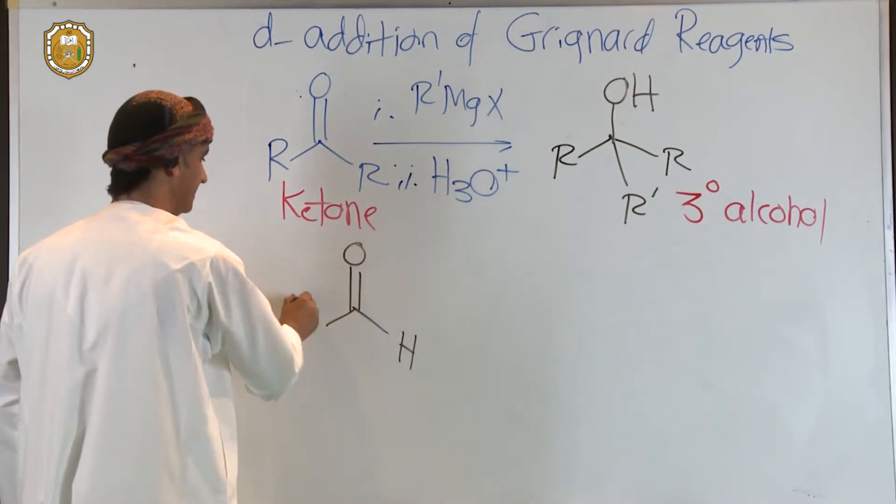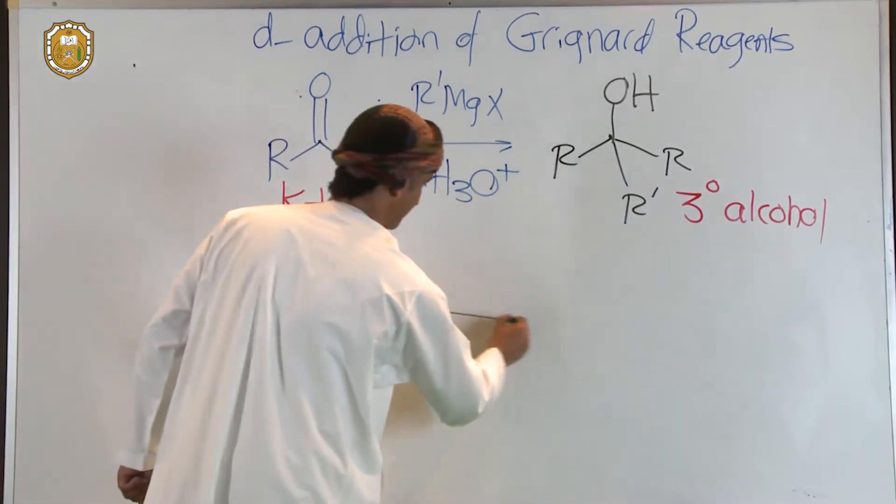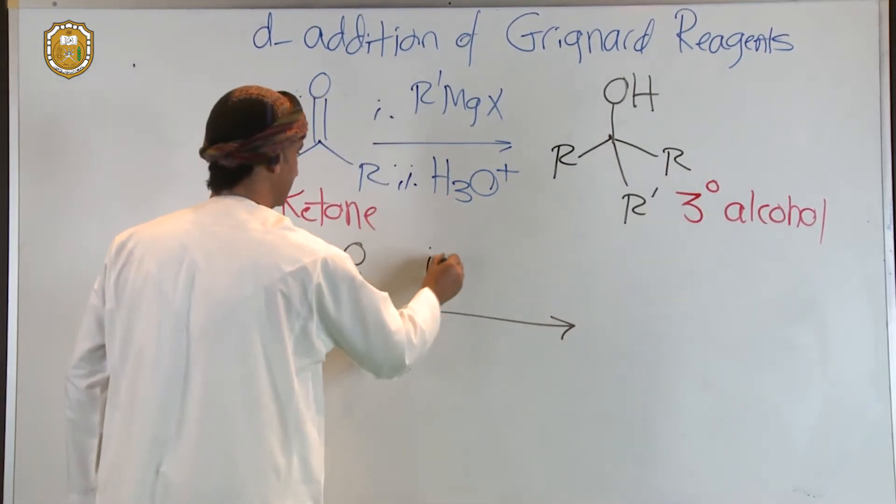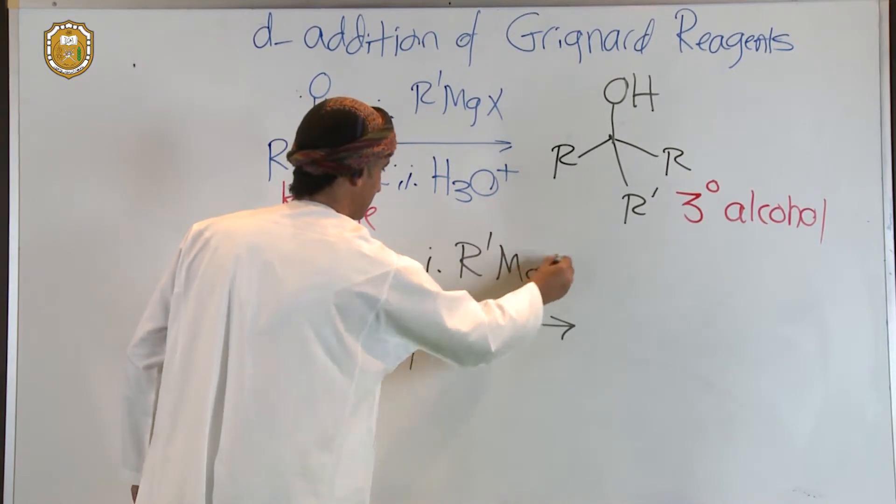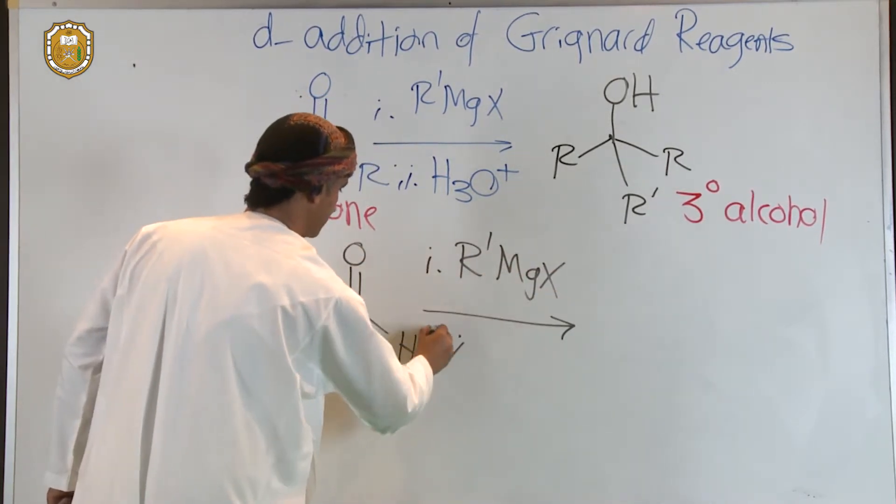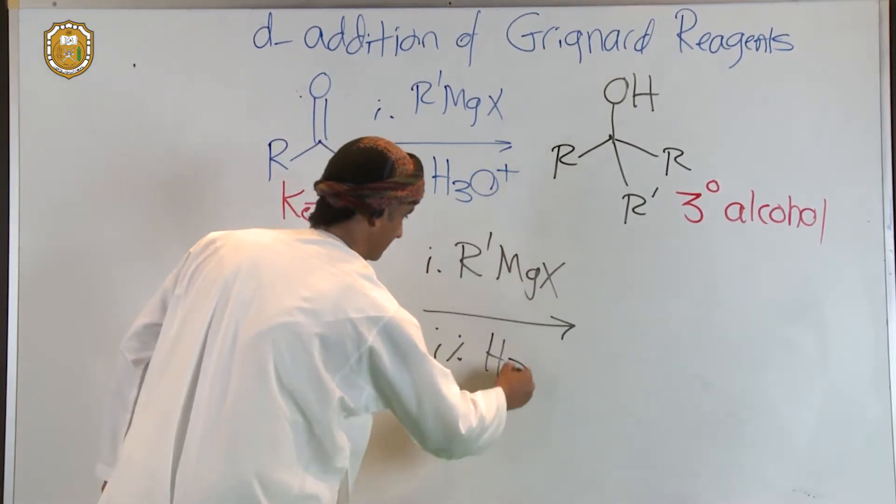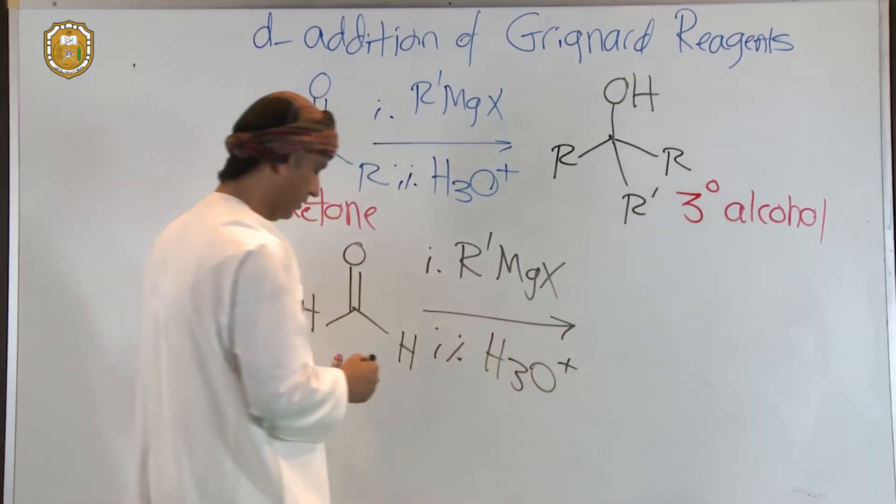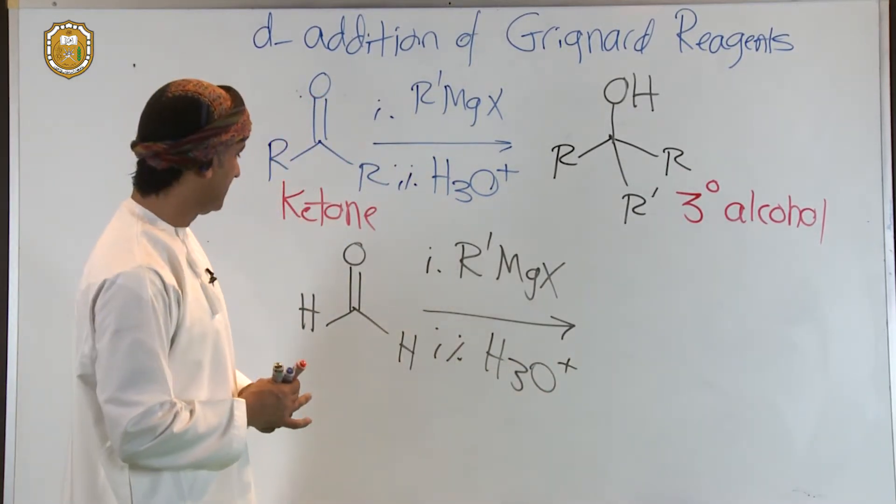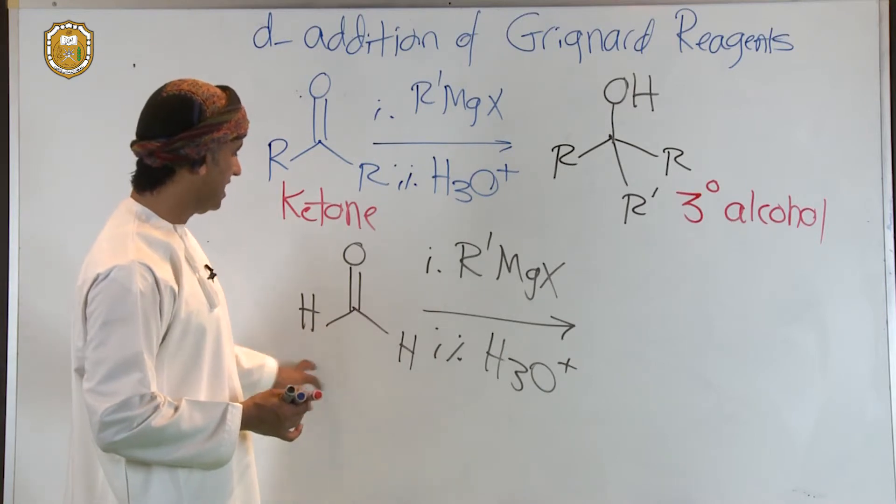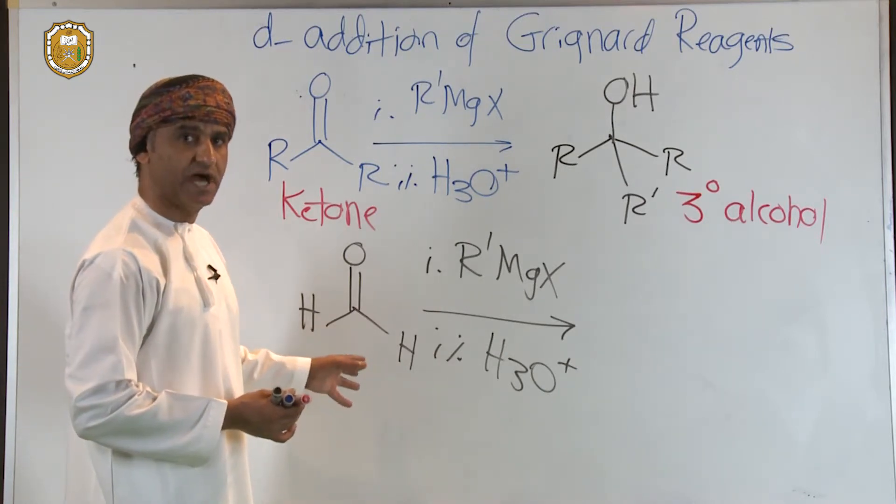So this is formaldehyde. If you react it with a Grignard in general of that formula, Grignard addition or nucleophilic addition takes place. Now the two groups are H and H—basically these are only hydrogens.